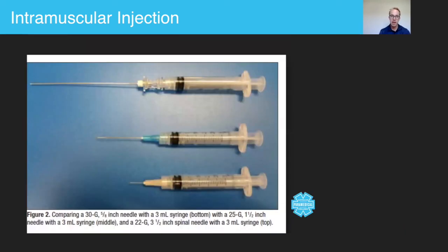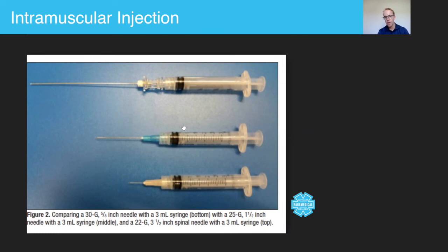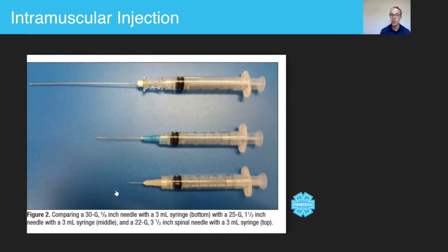This middle needle here, the 25 gauge, is generally what we use for intramuscular injections, but you can use shorter or larger ones if needed. Generally speaking, the 25 gauge is the one we tend to use for most people. The smaller needle shown here is a subcutaneous needle, but you can use it with children or the elderly. The choice of needle really does come down to you and what type of patient you're presented with.